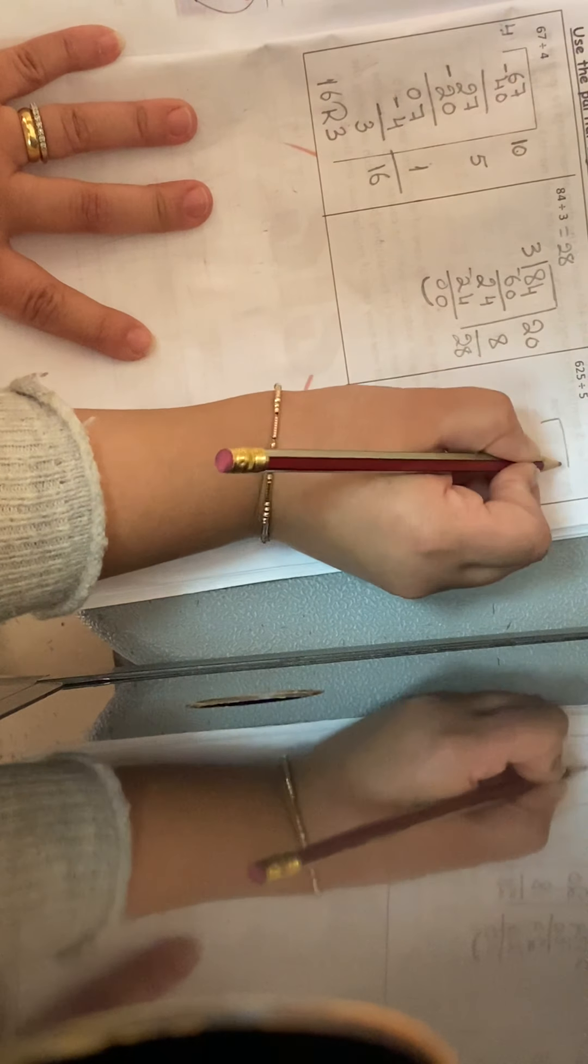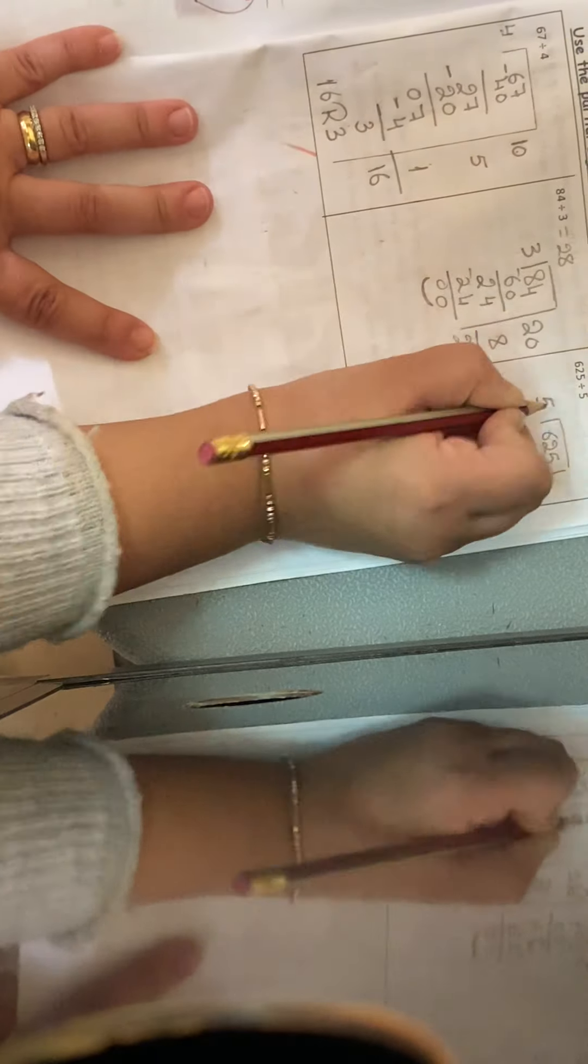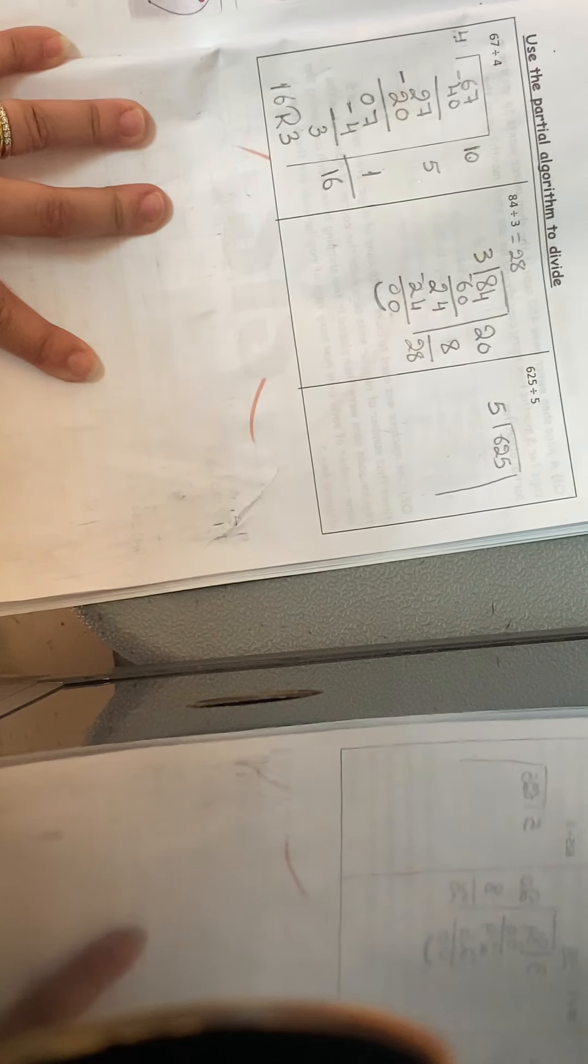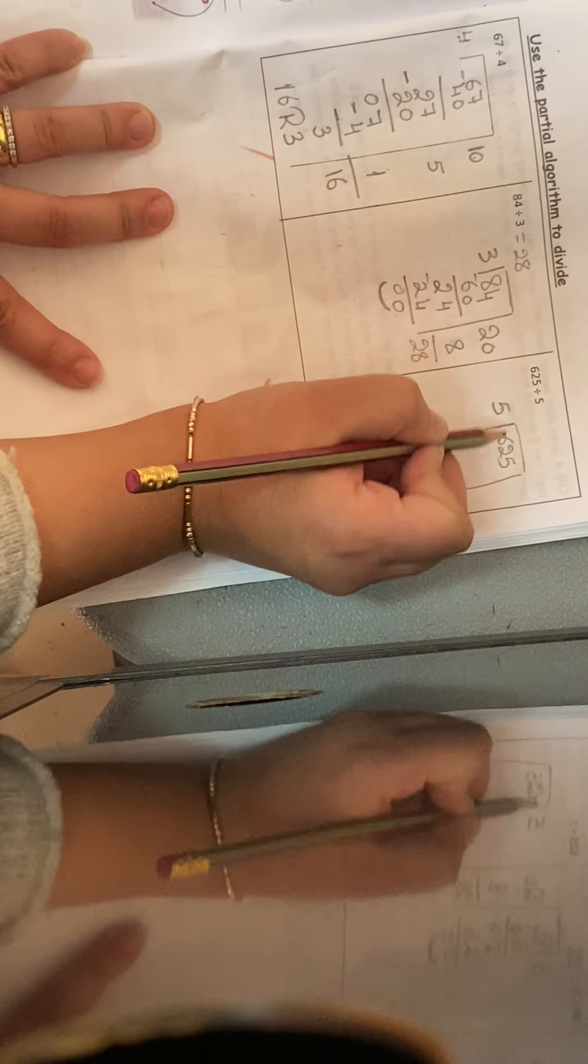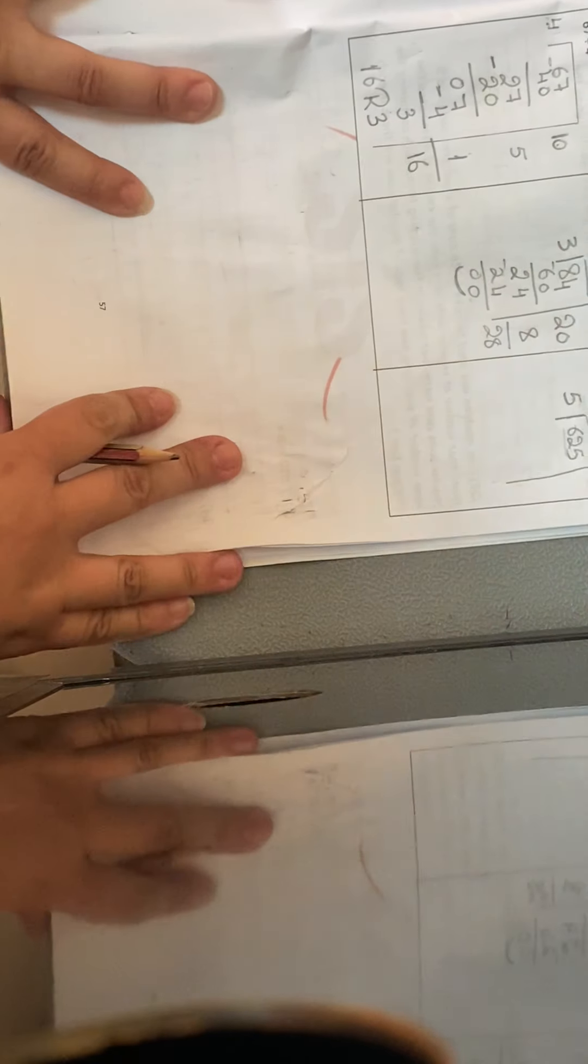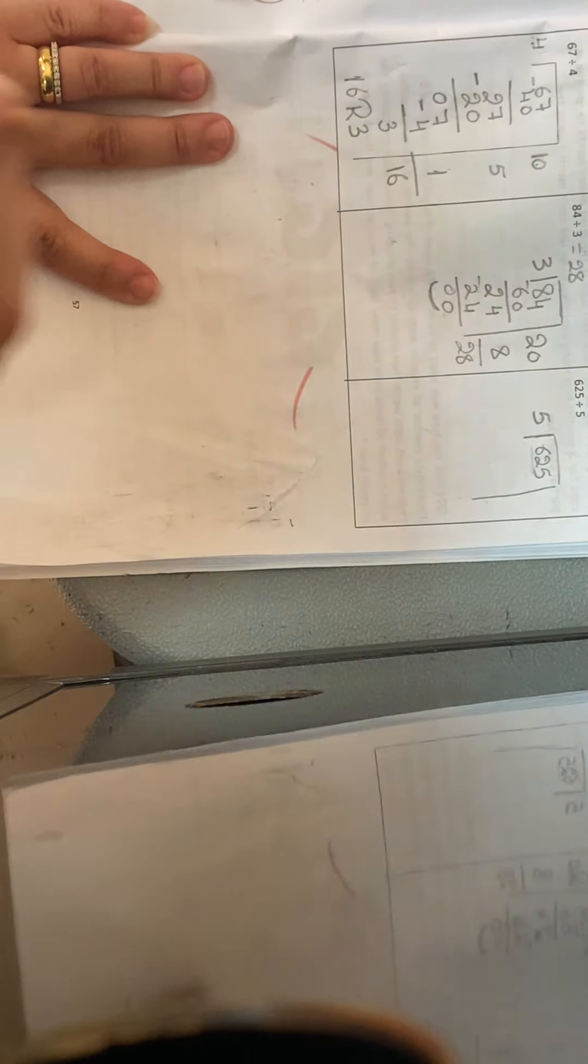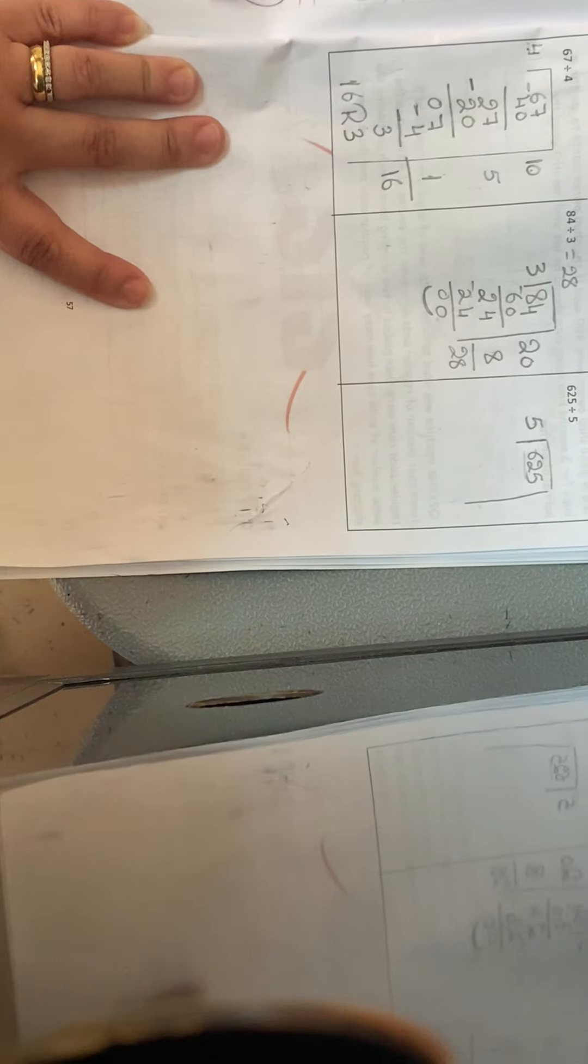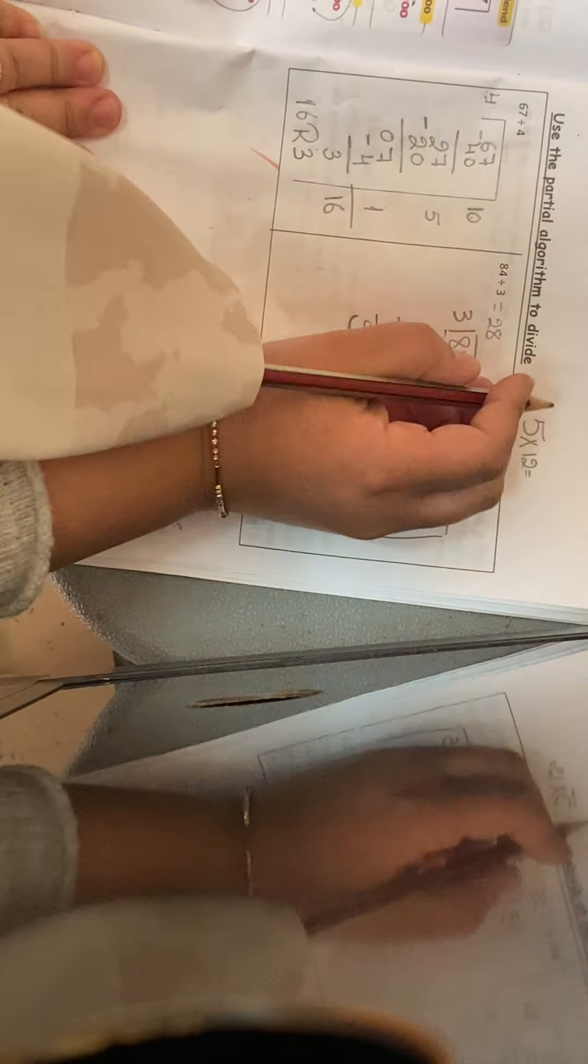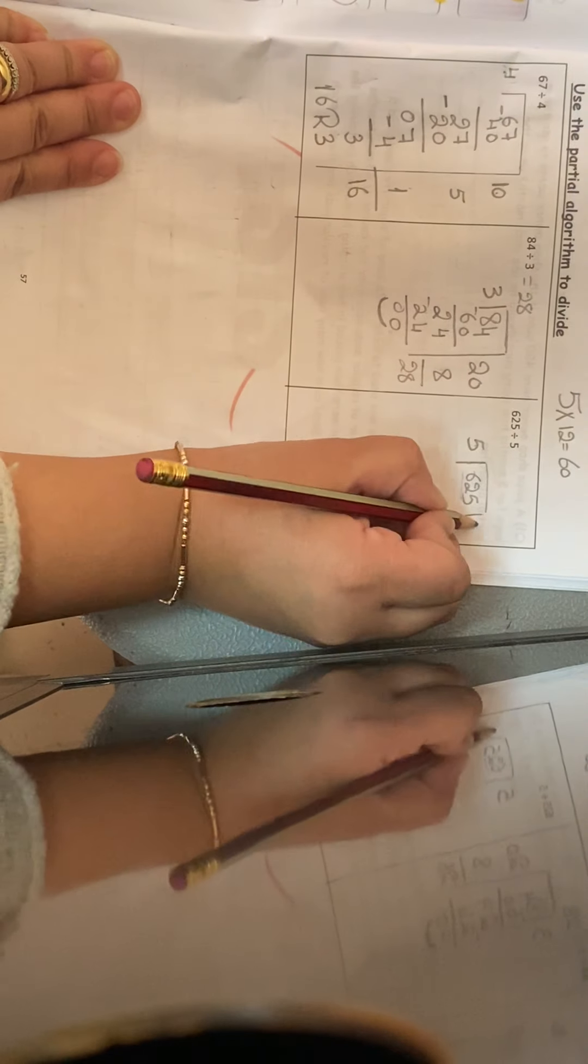Another one. 625 and 5. What times 5 gives me 600? I will find what times 5 gives me 600, multiples of 10. I find that 5 times 12 equals 60, but I wanted 600, so it will be 120.